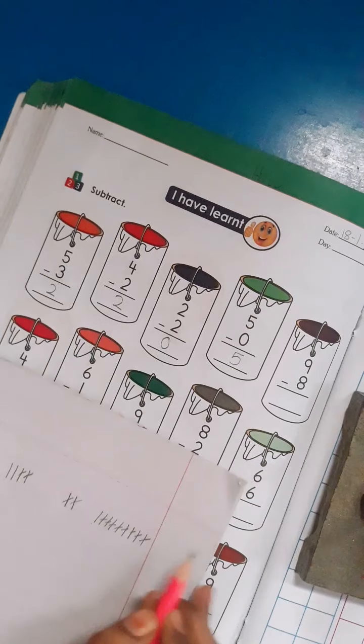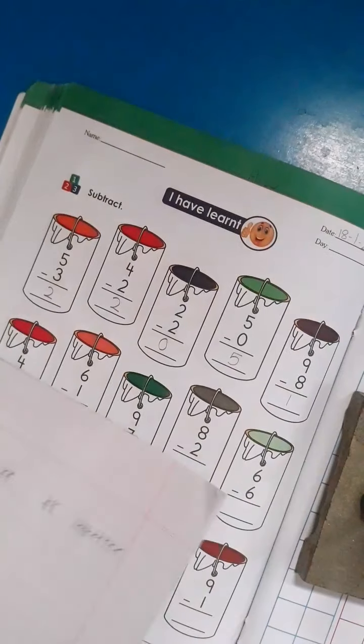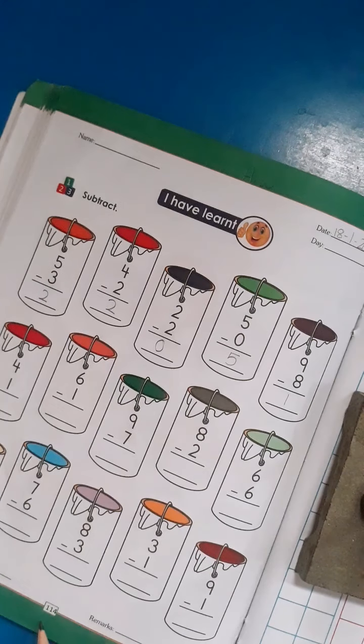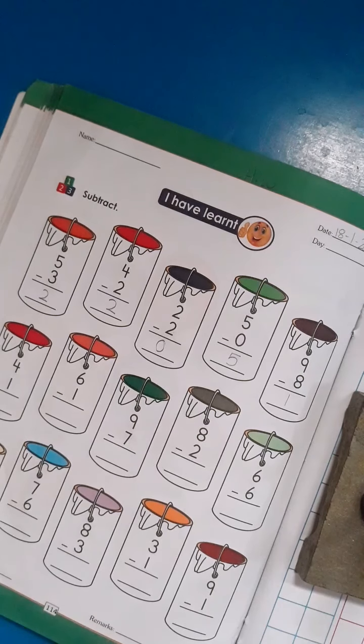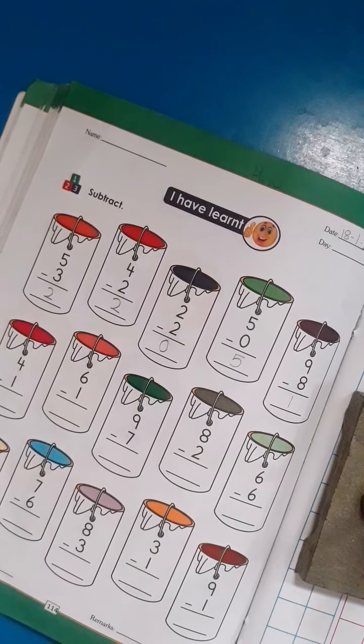1. I will write number 1 in the box. Now students, this is your homework. Complete book page number 114. Students, do this work properly, because this time we will not revise same work in class.